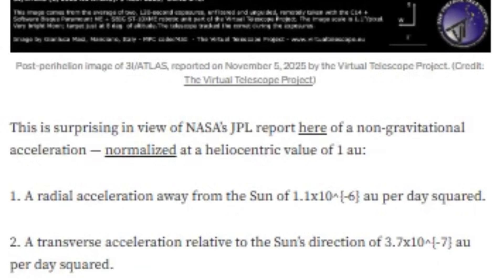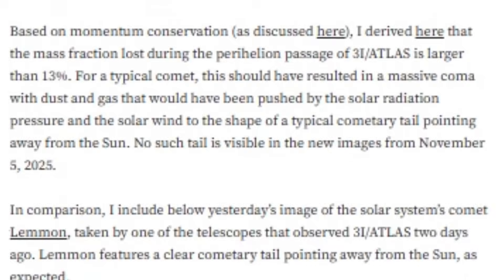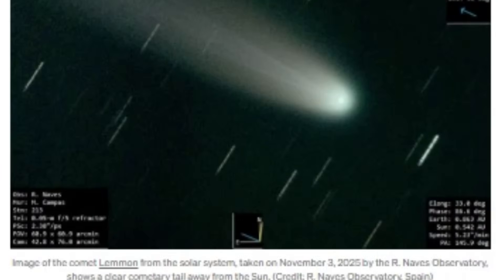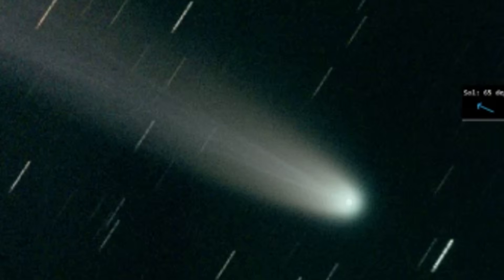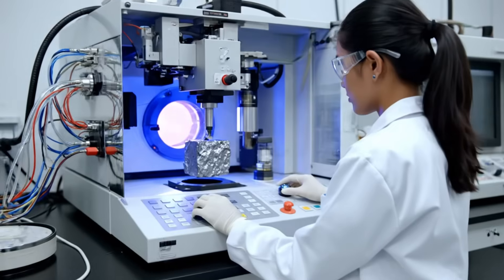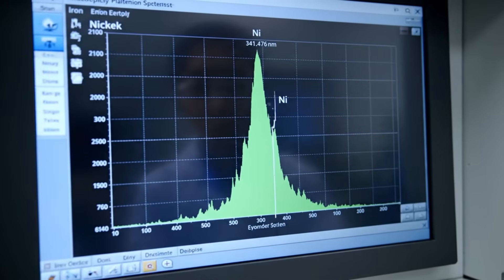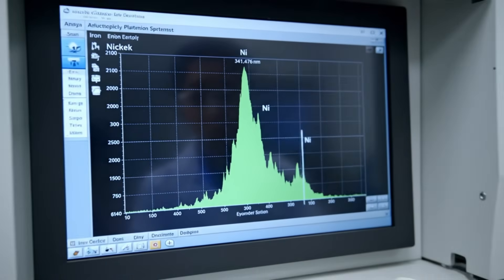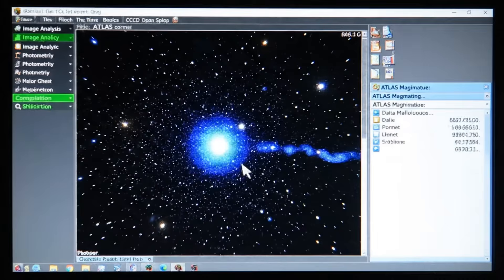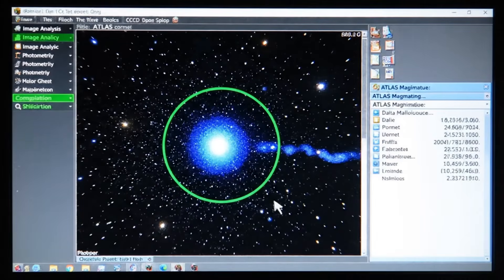To put this in perspective, the same images also captured Comet Lemon, a common comet from our solar system. Lemon displays exactly what we would expect: a clear and bright tail pointing away from the sun, formed by solar radiation pressure pushing gases and dust into space. Atlas, on the other hand, remains mysteriously clean without the visual signature that should accompany the massive material loss necessary to explain its non-gravitational acceleration.